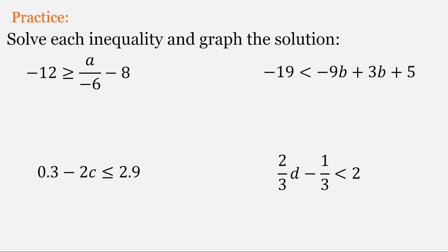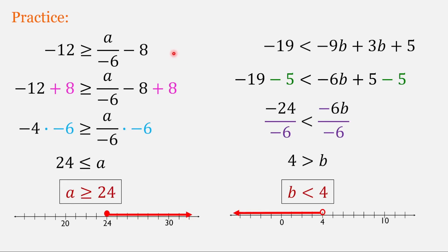A great way to learn is to practice on your own — go ahead and pause your screen and do these four problems. For all four of these, I did use the best practice of doing order of operations in reverse — first undoing addition and subtraction, followed by multiplication or division. To undo subtraction of 8, we add 8 to both sides. To undo division by negative 6, we multiply both sides by negative 6. We did multiply by a negative, so we have to switch the direction of the inequality, resulting in 24 less than or equal to a. Putting the variable on the left side, we get a greater than or equal to 24.